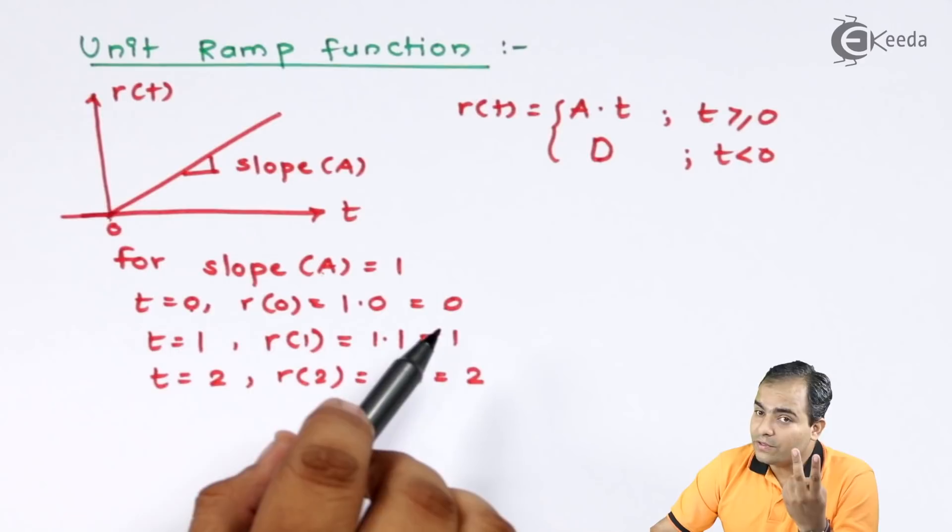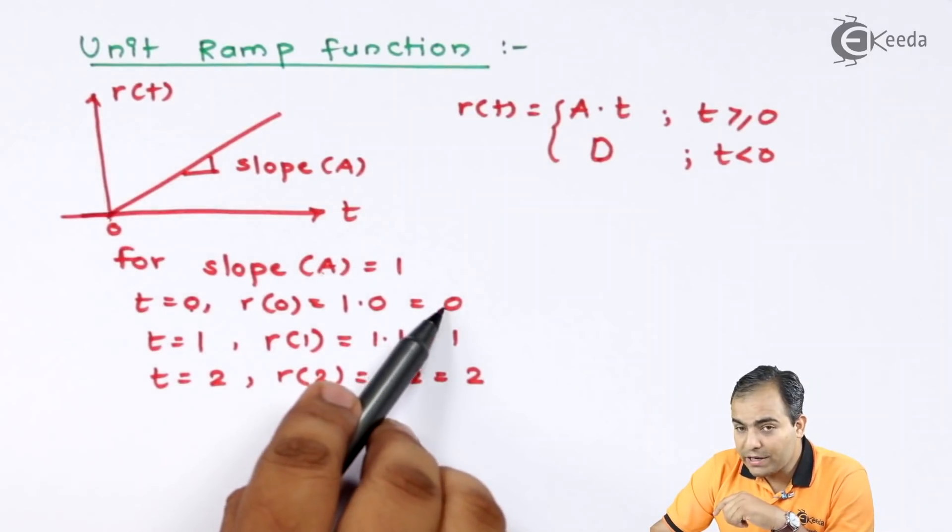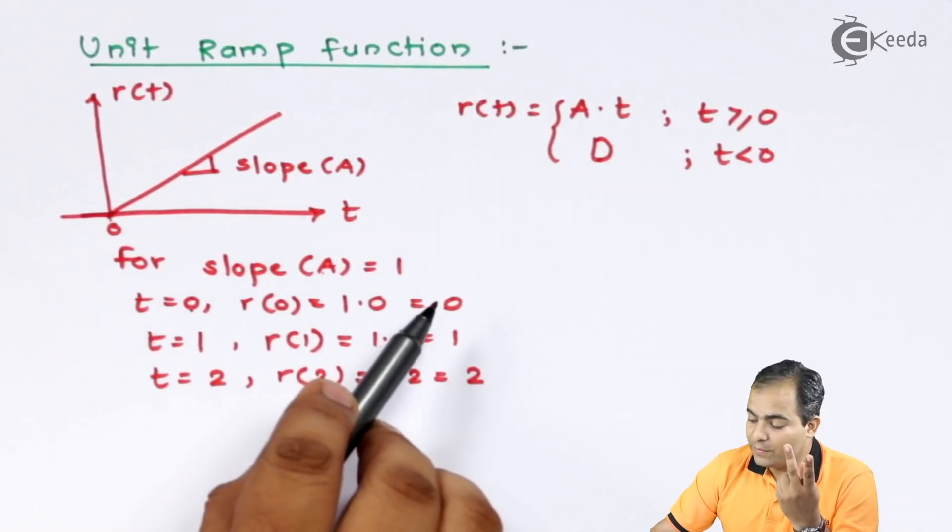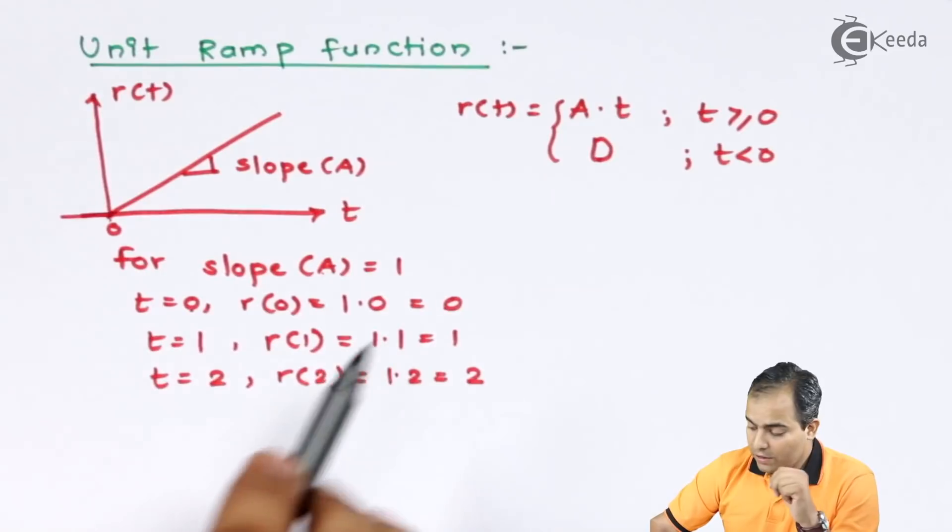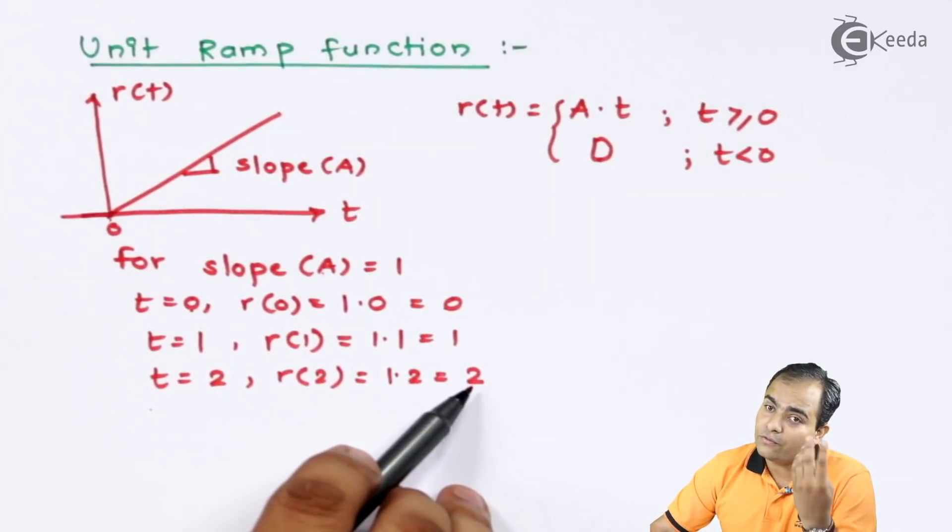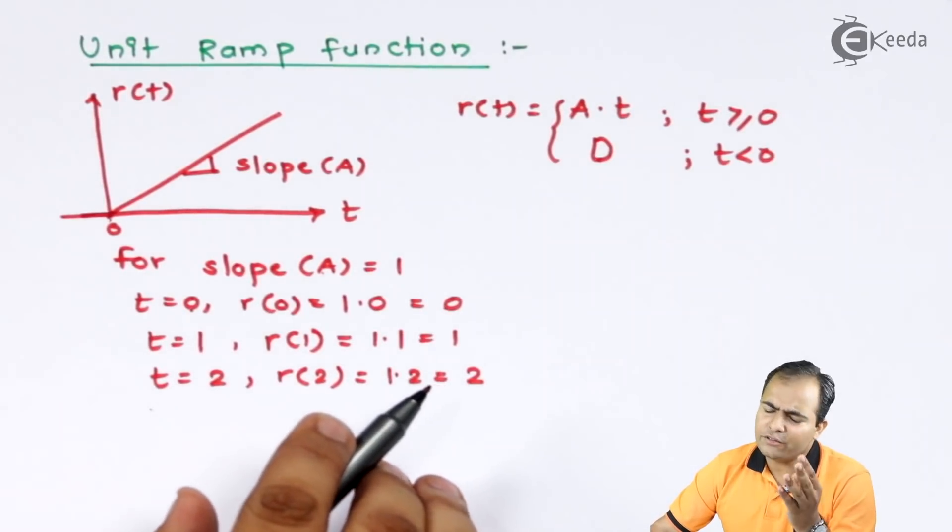If this slope value is 2, your amplitude will be increased by 2. For t equals to 0, it will be 0. But for t equals to 1, that amplitude will be 2. For t equals to 2, that amplitude will be 4 and 6 and so on.